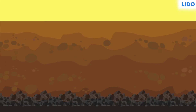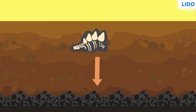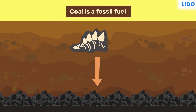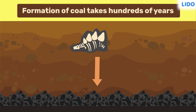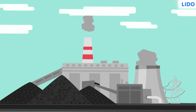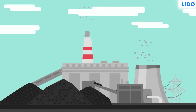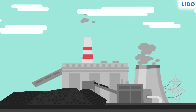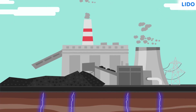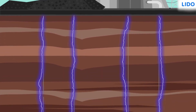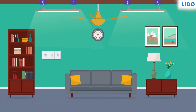Since coal is produced from the fossils or dead remains of plants, it is called a fossil fuel. The conversion of dead matter into coal is very slow and it takes hundreds of years. That is why coal should be used judiciously, otherwise it will get exhausted soon in the future. Reducing the consumption of electricity is one way to reduce the use of coal.